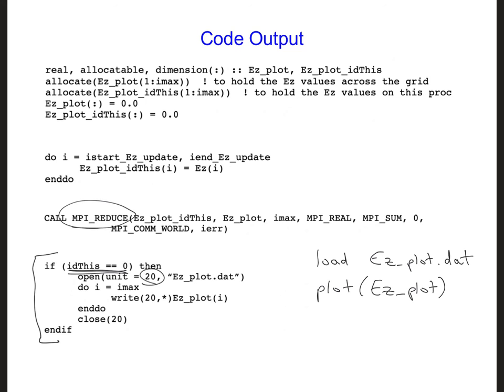Now MPI_reduce is really efficient, so this approach works well for small grids that can be held on one processor. However, for large FDTD codes that do not fit on one processor, usually what is used is parallel input output.